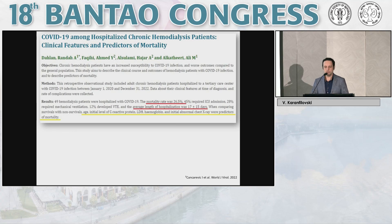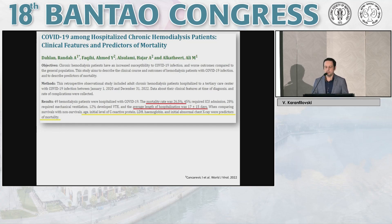Another study, also in a tertiary unit with COVID-19 patients, showed that predictors of mortality in this group were age, initial levels of CRP, lactate dehydrogenase, hemoglobin, and initial abnormal chest X-ray — findings similar to our study.